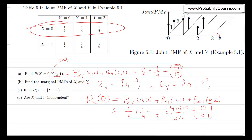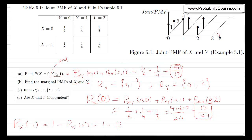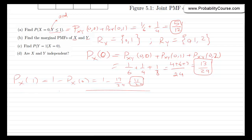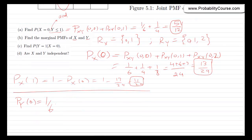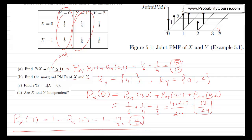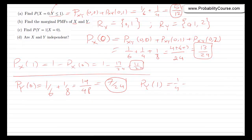So p_x(0) = 13/24. Since x is a Bernoulli random variable, p_x(1) = 1 - 13/24 = 11/24. For y, p_y(0) = 1/6 + 1/8 = 7/24; p_y(1) = 1/4 + 1/6 = 5/12; and p_y(2) = 7/24.